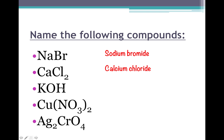For KOH, there are three capital letters, so right away you know there's a polyatomic in there. Since it's not NH4, the last two letters make up the polyatomic. Using the chart, OH is hydroxide. The first part is just named like normal — potassium. So the name of this compound is potassium hydroxide.